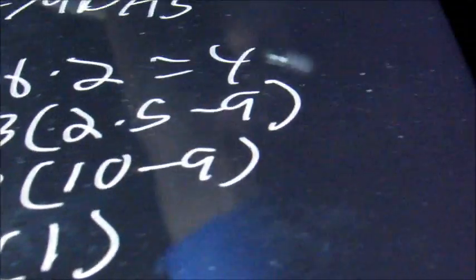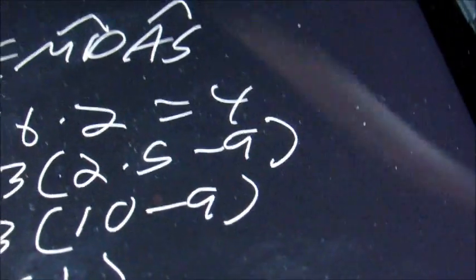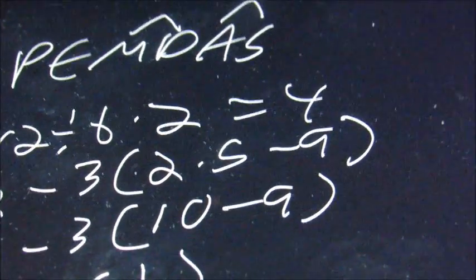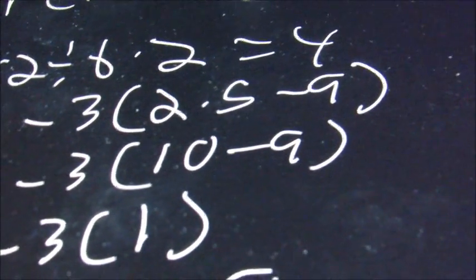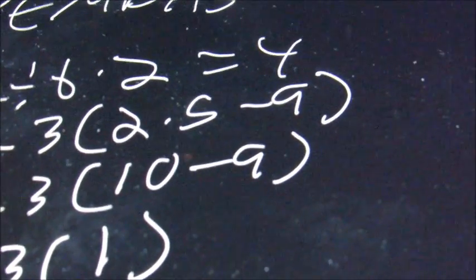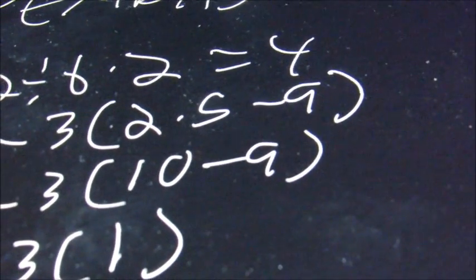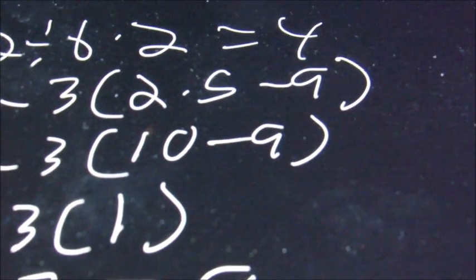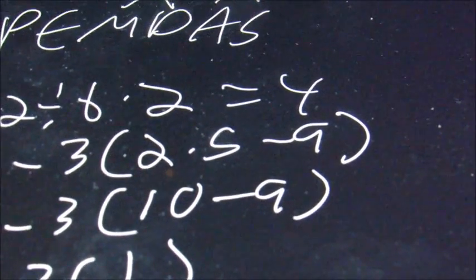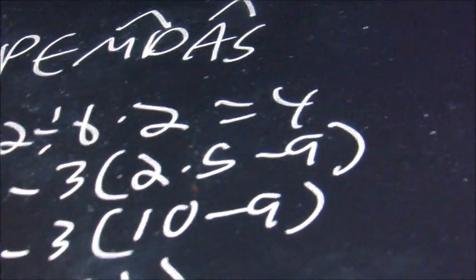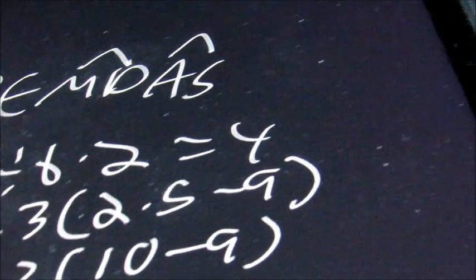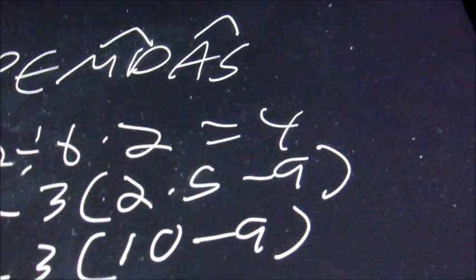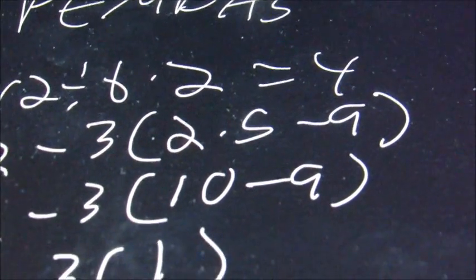That's the end of section 2.1. For credit, send me what the rules for exponents are. The examples were three to the four, negative three to the four, and negative three in parentheses all raised to the four — let me know the difference between all three of those.